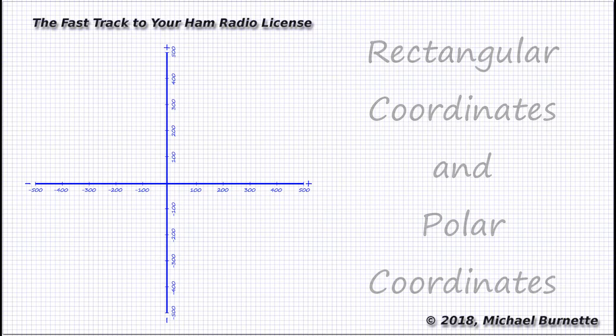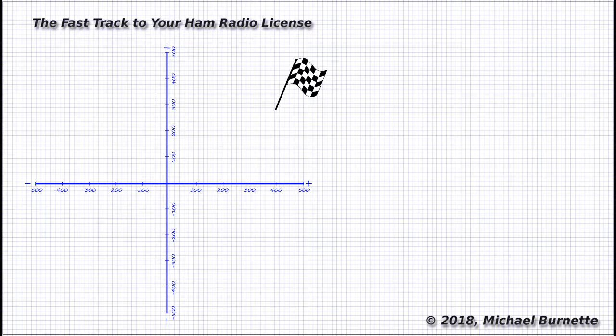Imagine that point is a destination, where you want someone to meet you. You could tell them, Ralphie, you walk east on the x road 400 paces, and then walk north 300 paces, and you'll be there. If you did that, you'd be using what the amateur extra exam calls rectangular coordinates. Specifically, the 400 and the 300 are the rectangular coordinates.